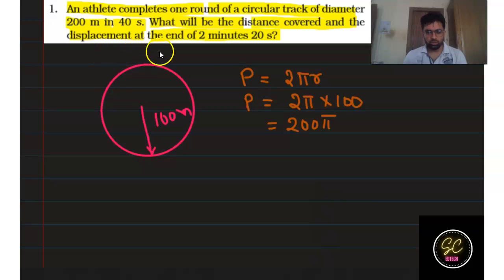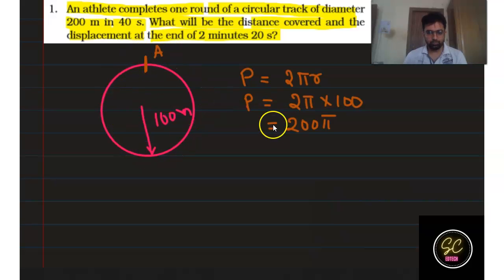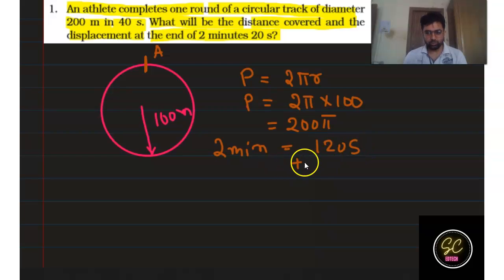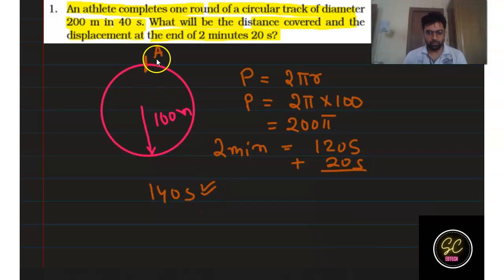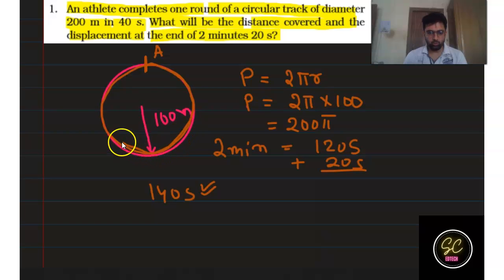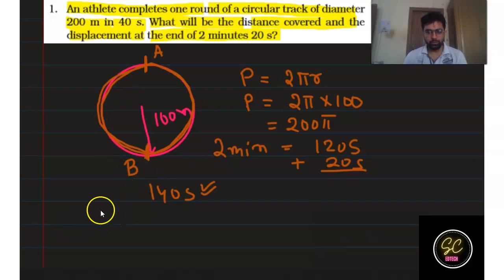For distance, 2 minutes and 20 seconds equals 140 seconds total. Suppose the athlete starts from a point and returns to it every 40 seconds. In 120 seconds (2 minutes) the athlete completes 3 full rounds, and the remaining 20 seconds is half a round — so in 140 seconds the athlete completes 3.5 complete rounds.